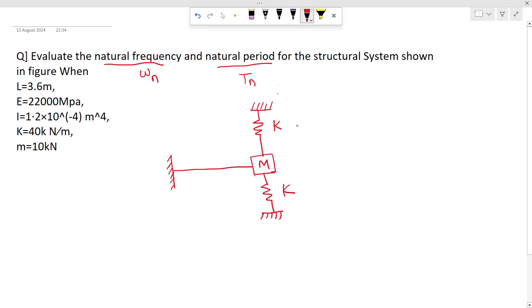Now the details of the beam are given. The length is 3.6 meters, E is 22000 MPa, and the moment of inertia is given.